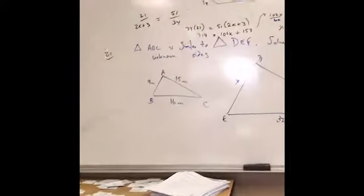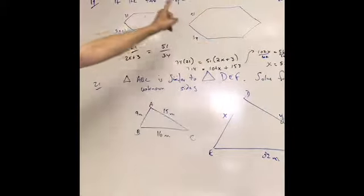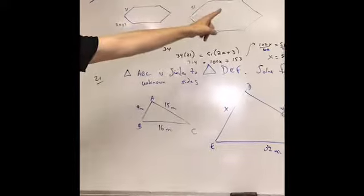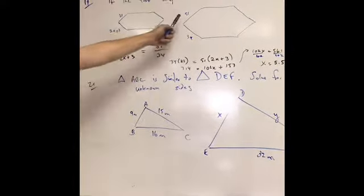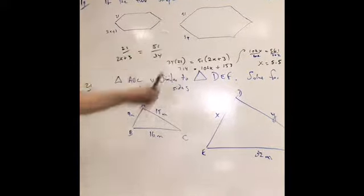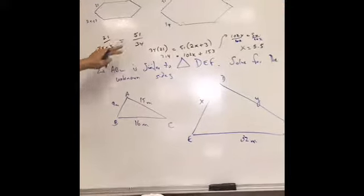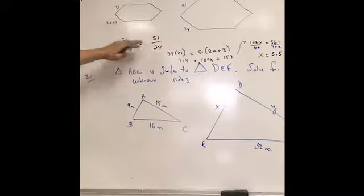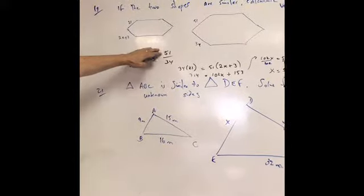Over here on number 19 in the packet, we have a shape like this and a shape like that, and it says that the shapes are similar. So that's going to make a big difference. It means that this to this is as this to this. In other words, as a ratio, 21 is to 51, as 2X plus 3 is to 34. And we can write this as a fraction. The ratio between this and this is in proportion to this and this.